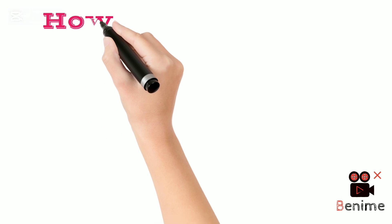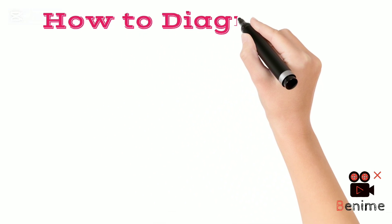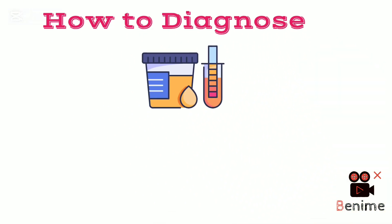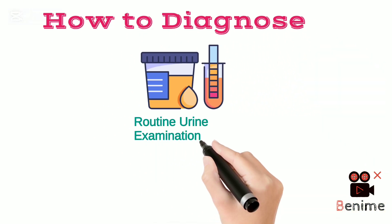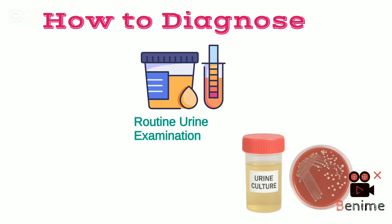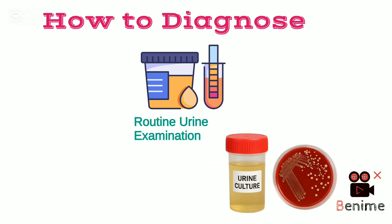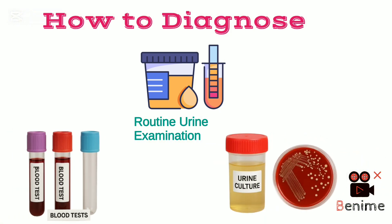Now, how to diagnose? A routine urine examination is done. If it is unclear, then the doctor might suggest a urine culture or blood test.